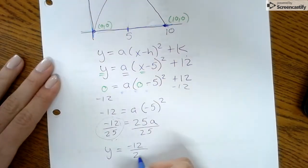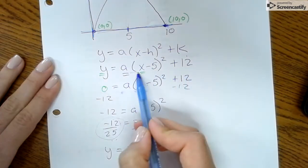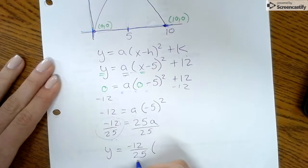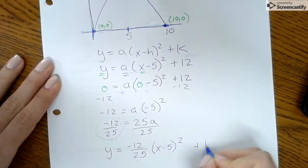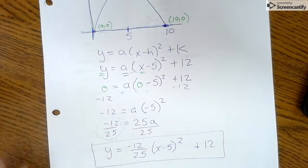And then you're just basically rewriting this same equation with your a value filled in. So I found my a value, and then it's (x minus 5) squared plus 12. And then that is your graphing form.